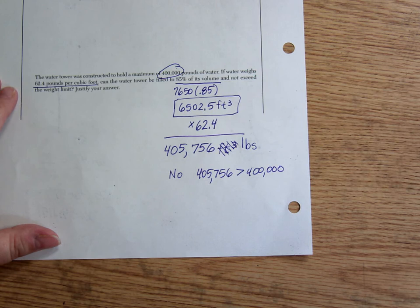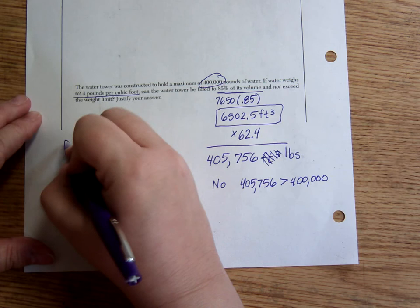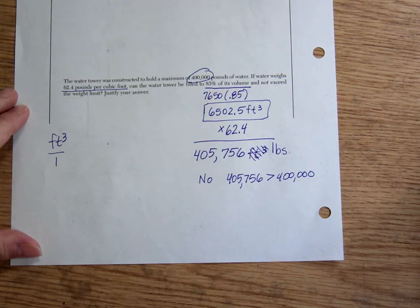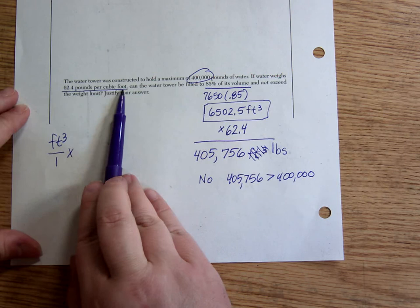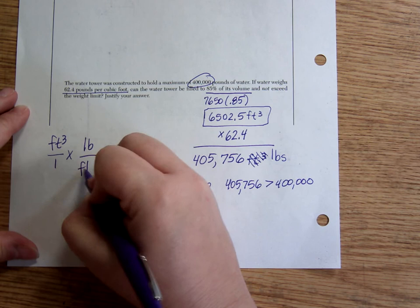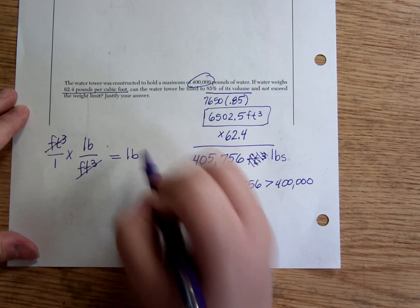Let me point out to you the units, how the units work here. We multiply feet cubed, which if it's not in a fraction, we just say that's over one, times the 62.4 we were given was pounds per cubic foot. Per means divided by or over, basically. Pounds per cubic foot. So this is how I know that I end up with pounds. And that is the end of the problem.